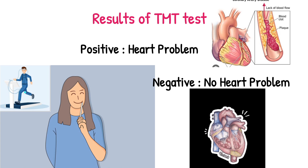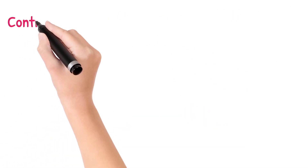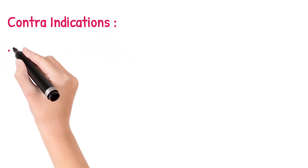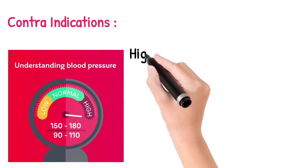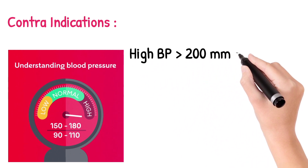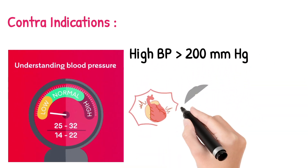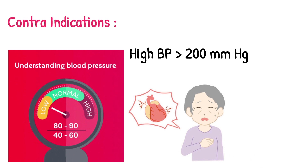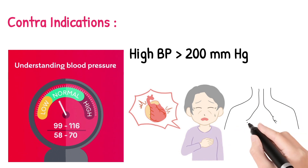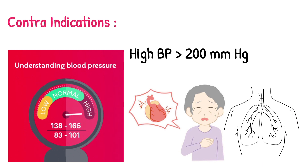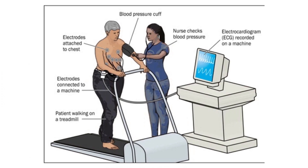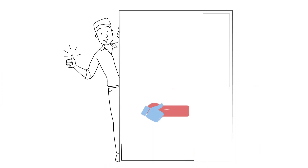Coming to the contraindications: people who have uncontrolled high blood pressure greater than 200 mmHg, people with unstable angina, aortic stenosis, or advanced chronic obstructive pulmonary disease — this test is contraindicated and should not be done. Please take a doctor's opinion before getting the test done. This is all about the TMT test. Hope you liked the video — please share and subscribe to our channel.